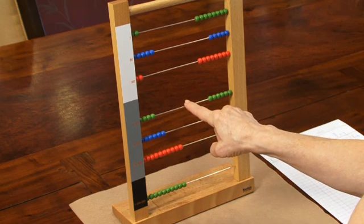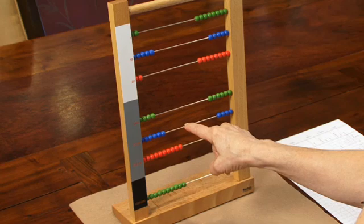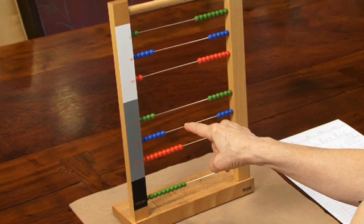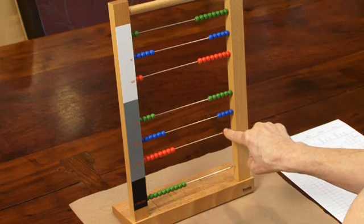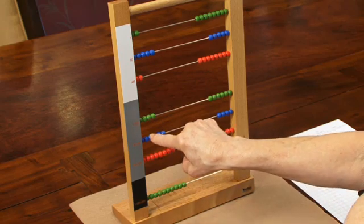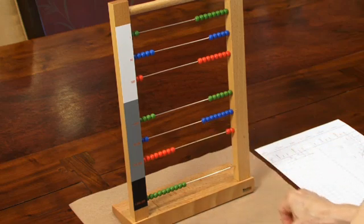8 tens thousands taken 3 times is 24 tens thousands, 200 thousands, 4 tens thousands.